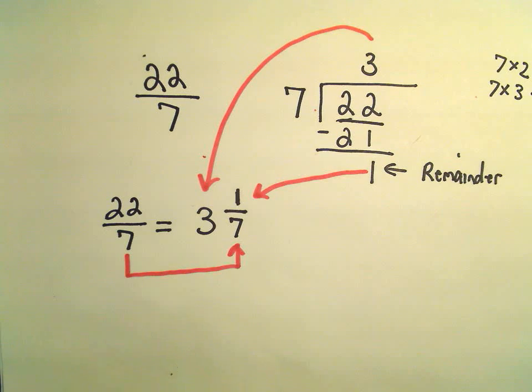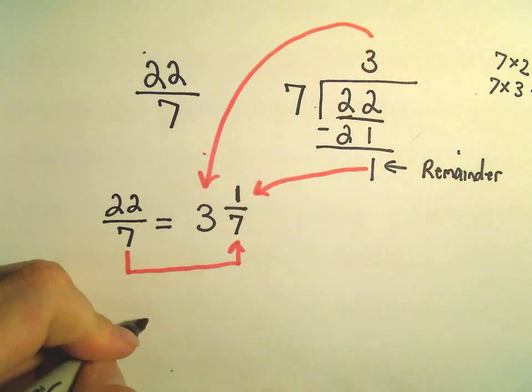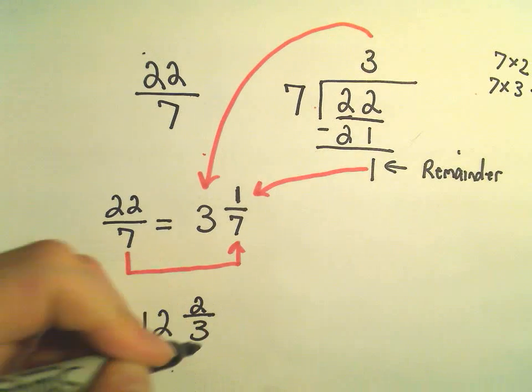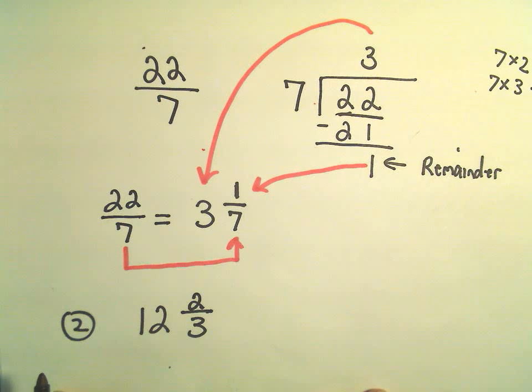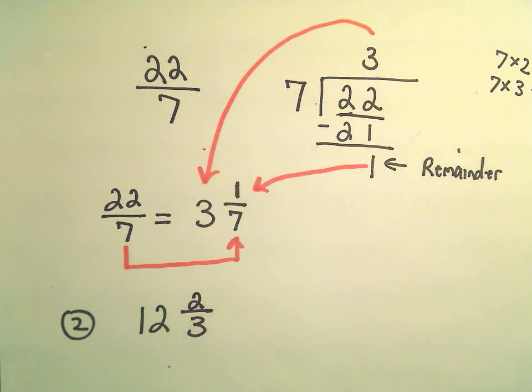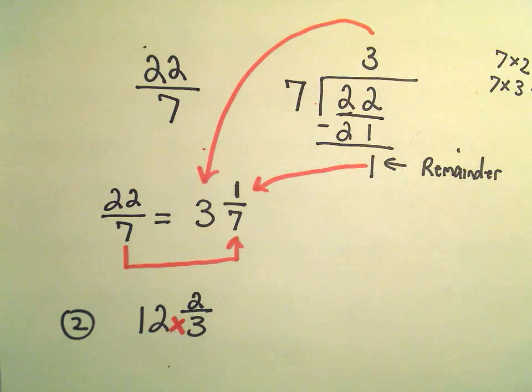So let's see. The other one here, if we take our second example, if we take twelve and two-thirds, if we write this as a fraction, there's kind of a couple different ways we could do it. What I always do is I just take the bottom number times the number out front, so I'm going to take three times twelve.